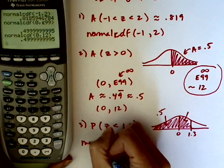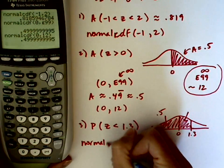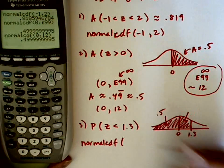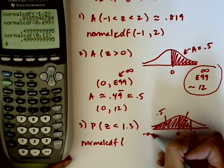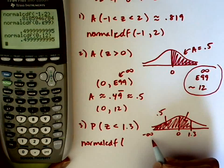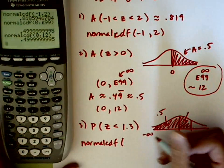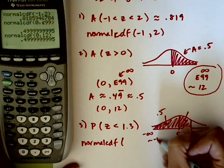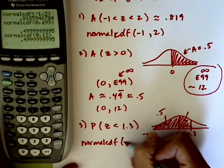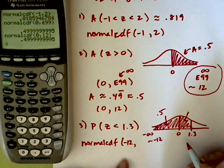Well, to get this into the calculator, I'm going to use the normal CDF function again. Now the leftmost, I'm going off forever to the left, so it's going to be negative infinity, but we saw that 12 works. So let's just go ahead and use something like negative 12. You could use the negative e99 if you wanted to. So I'm going to use negative 12, and then the rightmost is 1.3.